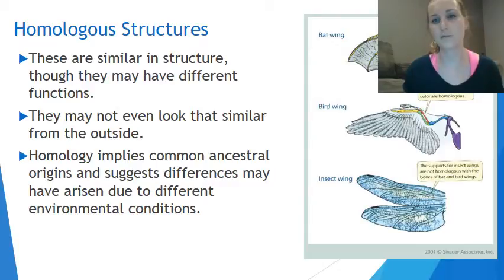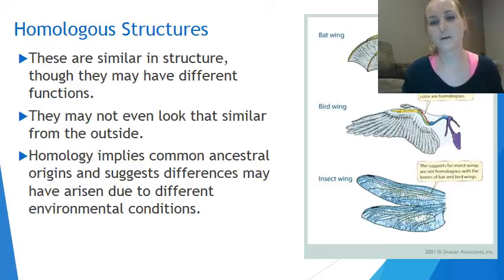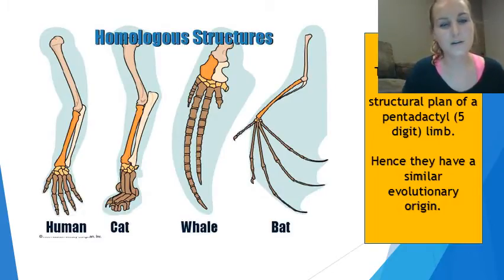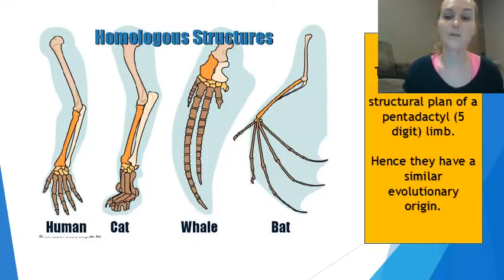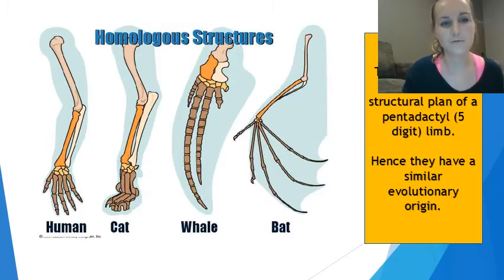The bat wing and bird wing are homologous — you can see the different bones that are similar in each organism, though bat wings look different from bird wings which have feathers. Another example: these animals all possess a pentadactyl limb. 'Penta' means five and 'dactyl' means digit, so a five-digit limb. Color-coded, you can see how it corresponds in each organism, although a whale's fin looks very different from a human's hand.